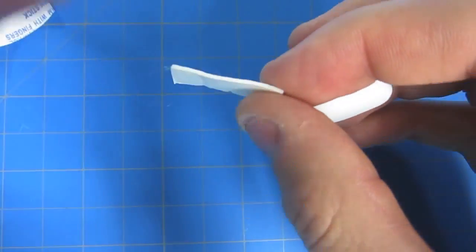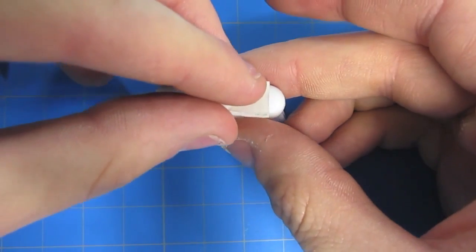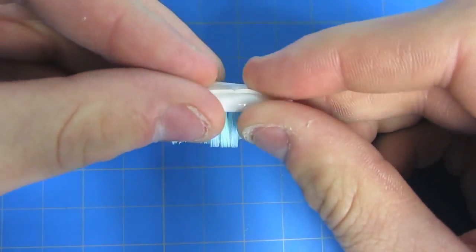Take your double-sided foam tape and put it on top of the toothbrush head. When it's nice and secure, peel the other layer off.